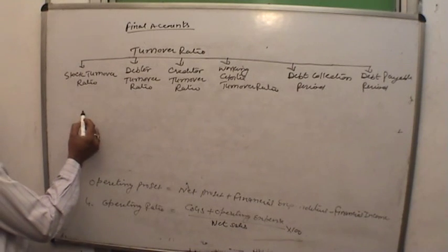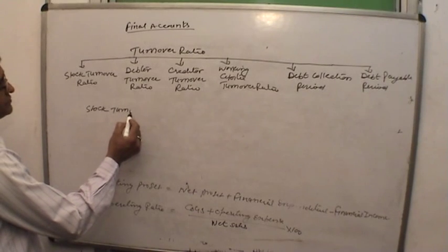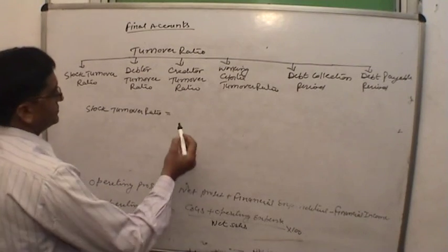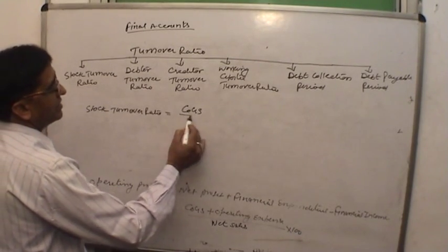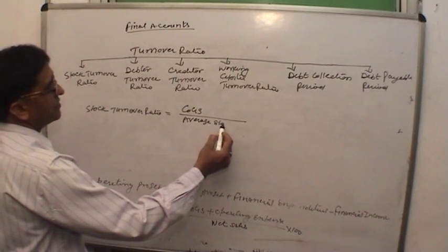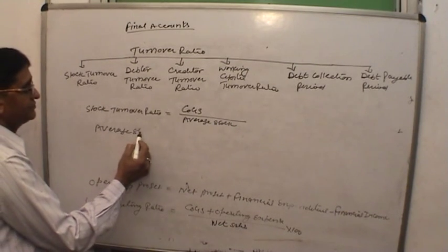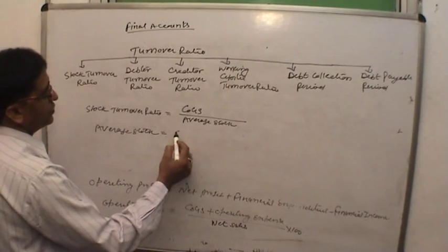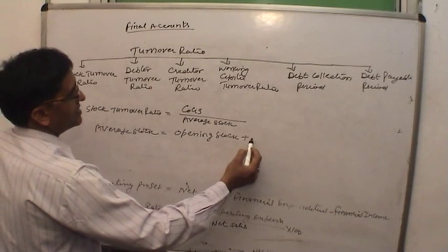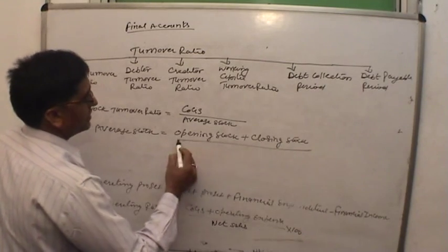Stock turnover ratio equals COGS divided by average stock. Average stock equals opening stock plus closing stock, divided by 2.